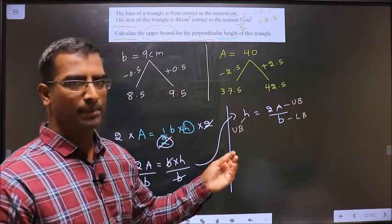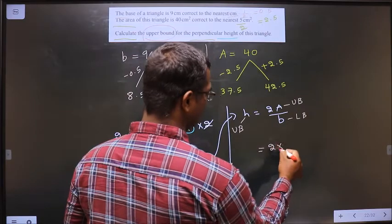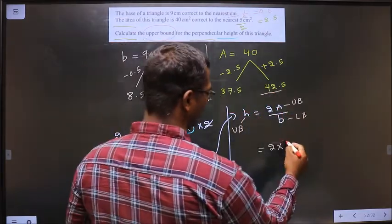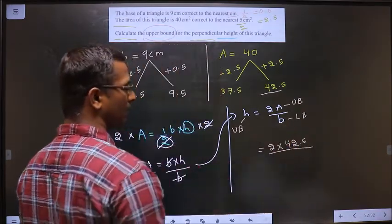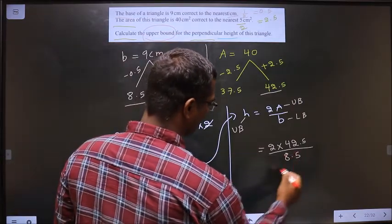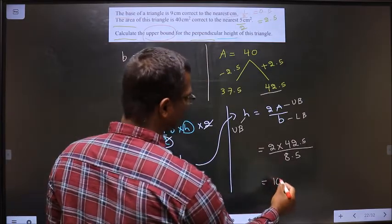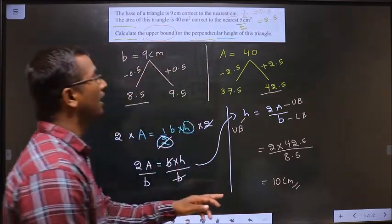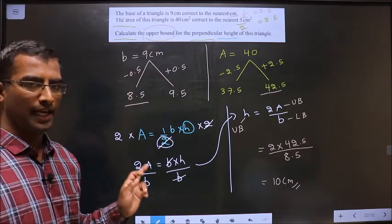So now let us replace the values. So 2 into 2. Upper bound for A is 42.5, by lower bound for b is 8.5. So put this in the calculator. We get 10 units centimeters. So this is the upper bound for height of the triangle. Am I clear?